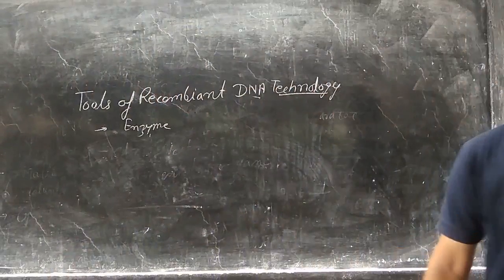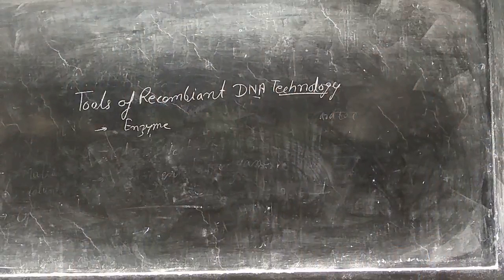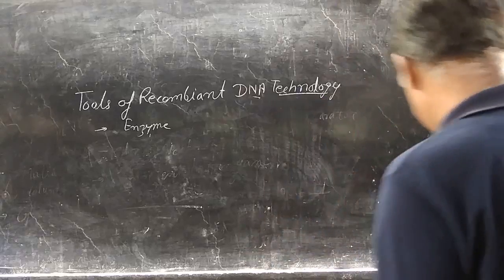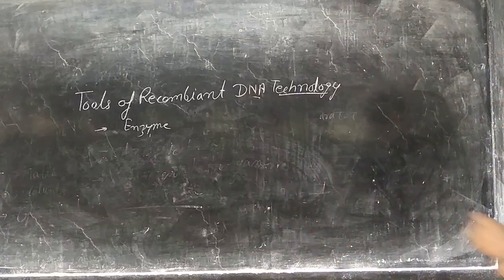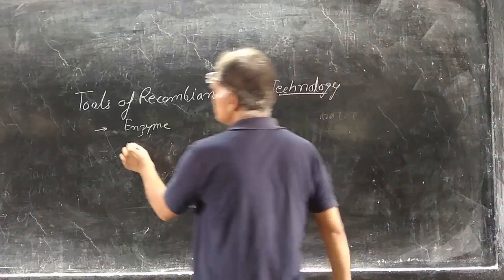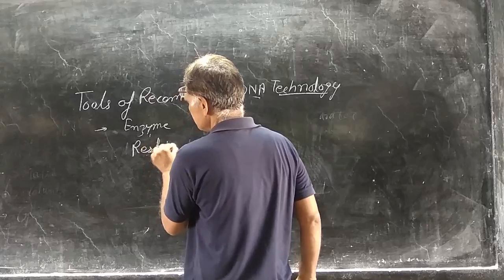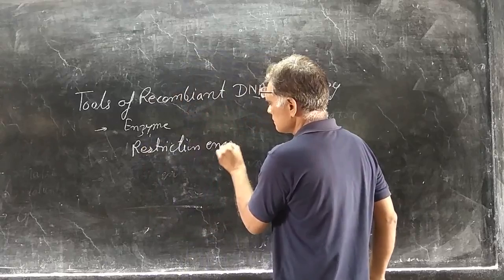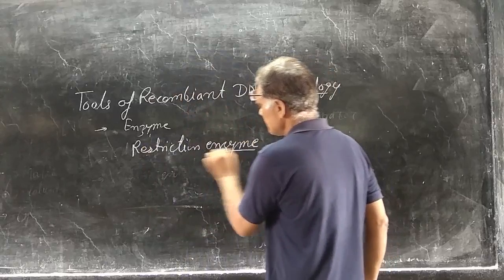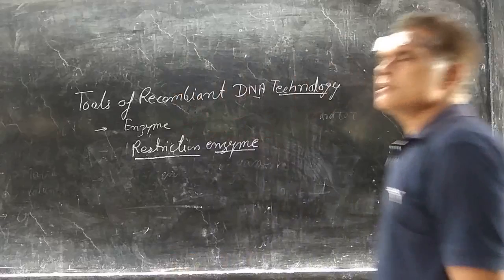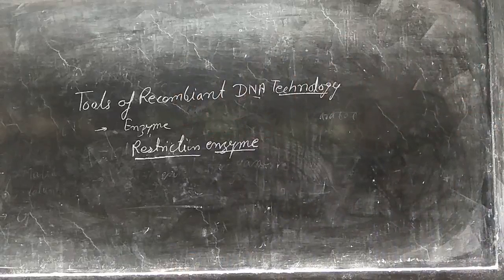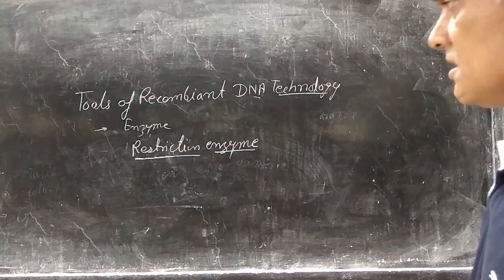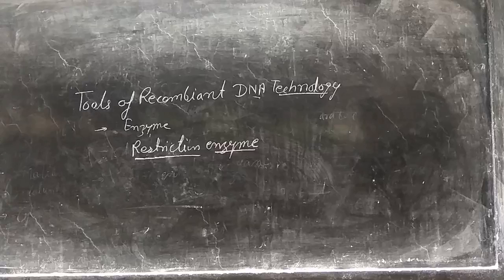The first tool we study is enzymes — different types of enzymes required for the formation of recombinant DNA. First one is restriction enzymes. These enzymes cut the DNA fragments from various locations.